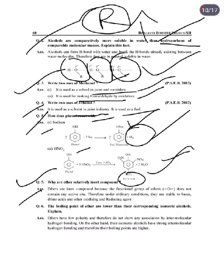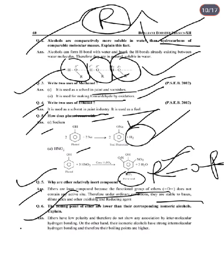Next: Why are ethers relatively inert compounds? Ethers are inert because the functional group C–O–C does not contain any active site. Therefore, under ordinary conditions, they are stable to dilute bases, dilute acids, and other oxidizing and reducing agents. Both sides of the oxygen have alkyl groups attached, reducing reactivity significantly.